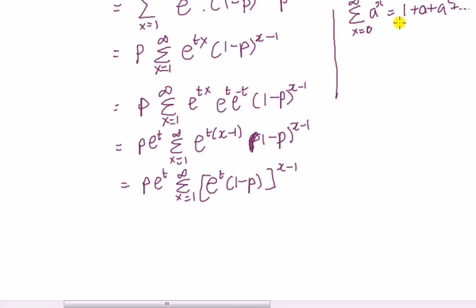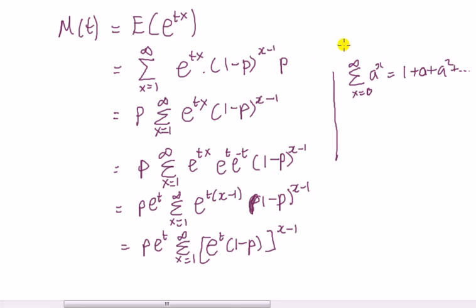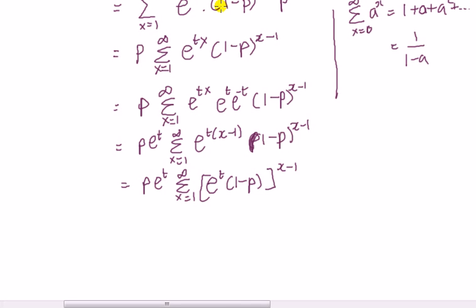And we know something about this because if absolute value of a is less than 1 and we know that this comes to 1 over 1 minus a, this is geometric progression. And if it was any hint at all this x here is geometric distribution, isn't it? Geometric distribution geometric progression.